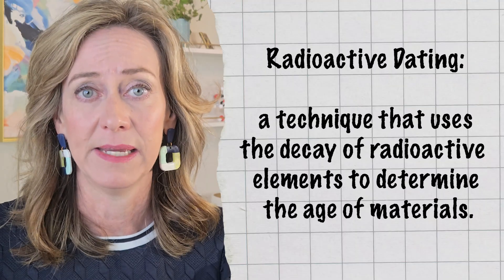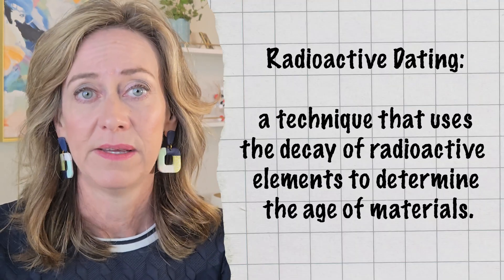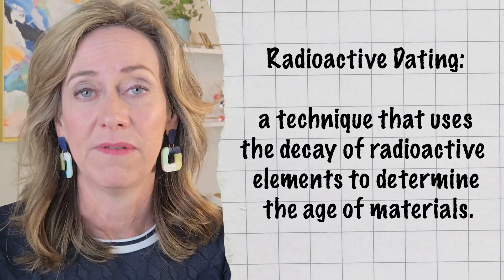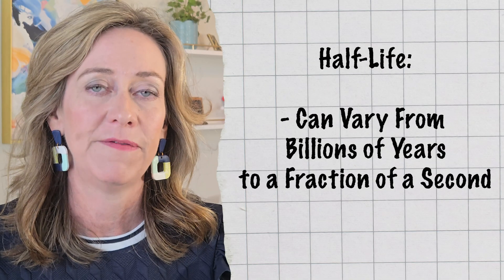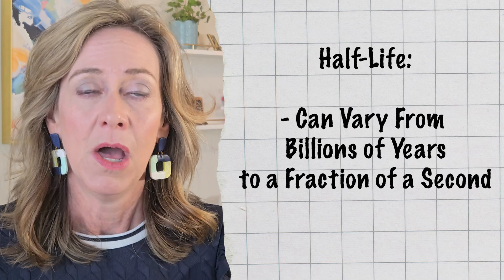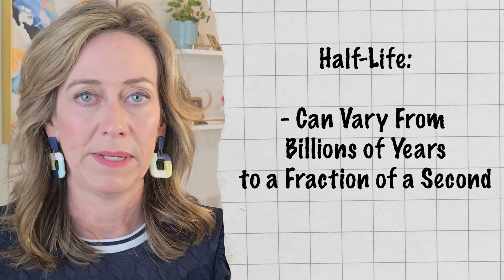This is called radioactive dating, and it has revolutionized our understanding of the history of life on our planet. The process of radioactive decay is often compared to a ticking clock, because each isotope has its own unique half-life — the time it takes for half of the original amount of the isotope to decay. Some isotopes have a half-life that spans billions of years, while others decay much more rapidly. Understanding these half-lives is crucial for accurately dating ancient material and unraveling the mysteries of our past.